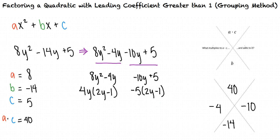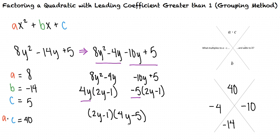Now that we have factored our groups so that each of them have a common quantity, 2y minus 1, we know that this will be one of our factors. Next, we take the two numbers we pulled out to determine our second factor. In this case, we got a positive 4y and a negative 5, so our two factors are 2y minus 1 and 4y minus 5.